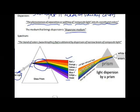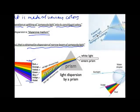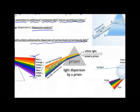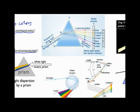The band of colors obtained by the dispersion of a narrow beam of composite light is called a spectrum. A narrow beam of composite light enters and disperses at a point, producing this band of colors known as a spectrum.